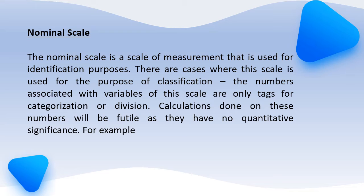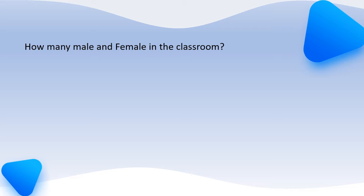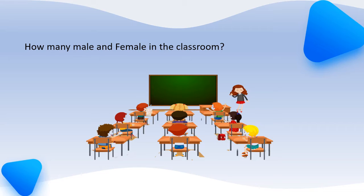Let's discuss an example. For example, we have to decide how many males and females are in the classroom. You can identify the persons in your class. Here the nominal scale starts — if any other person has to do category-wise classification, their first task will be to identify how many are male and how many are female, then separate them, and then count. But the process before counting — that identification — is the nominal scale. This is the easiest example, and the meaning of nominal scale should be clear.